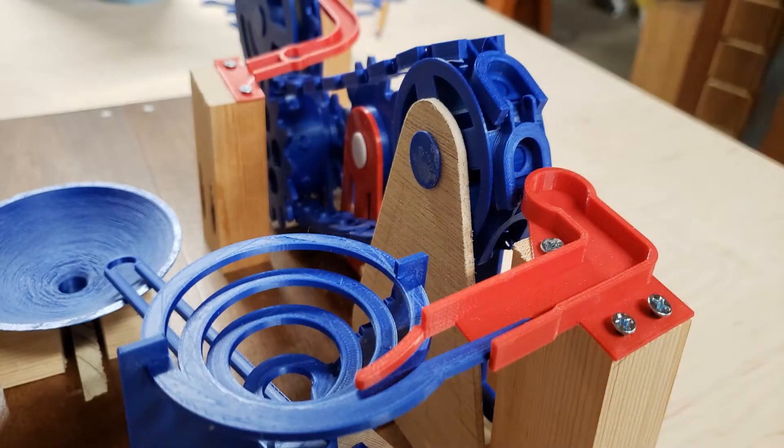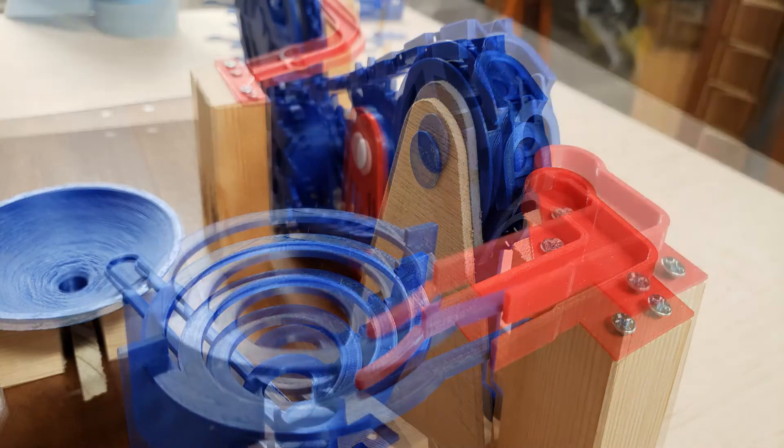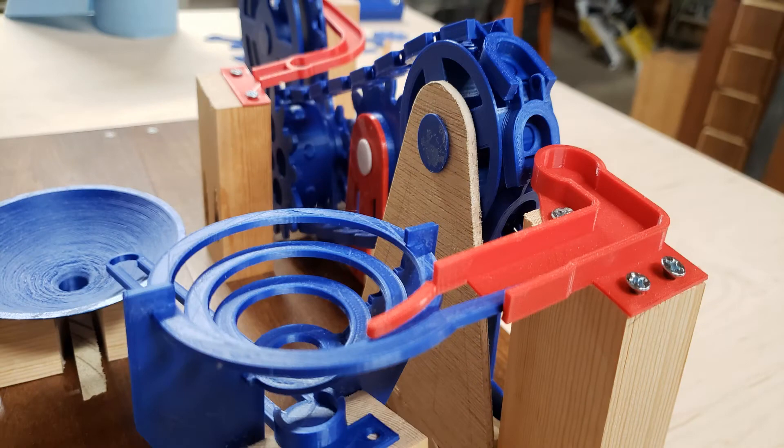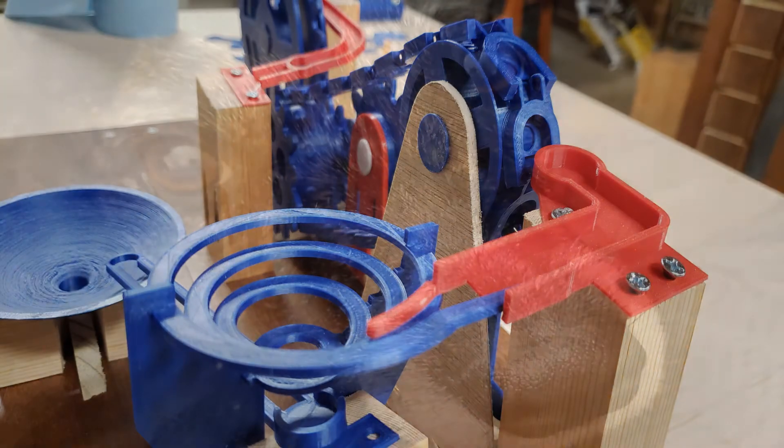Then it drops out of the belt into the other red chute which has the little guide that puts it into the spiral, then into the spiral down to the bottom and onto the next chute. All of this made possible by my special helper.